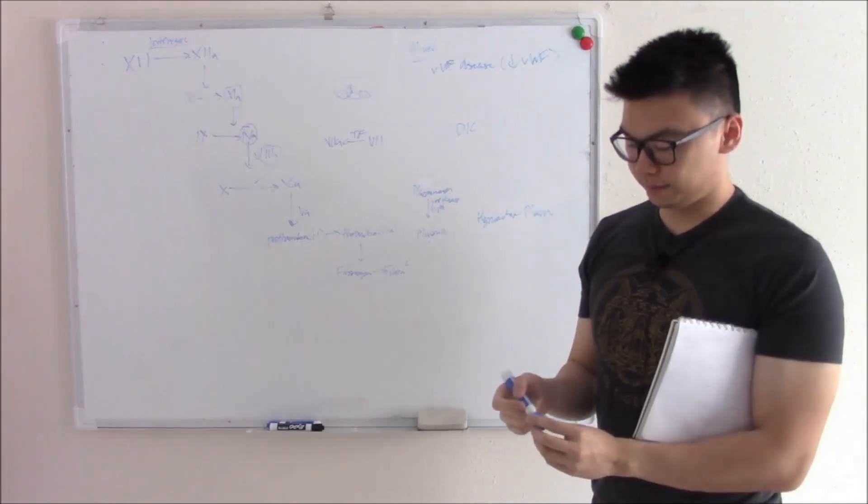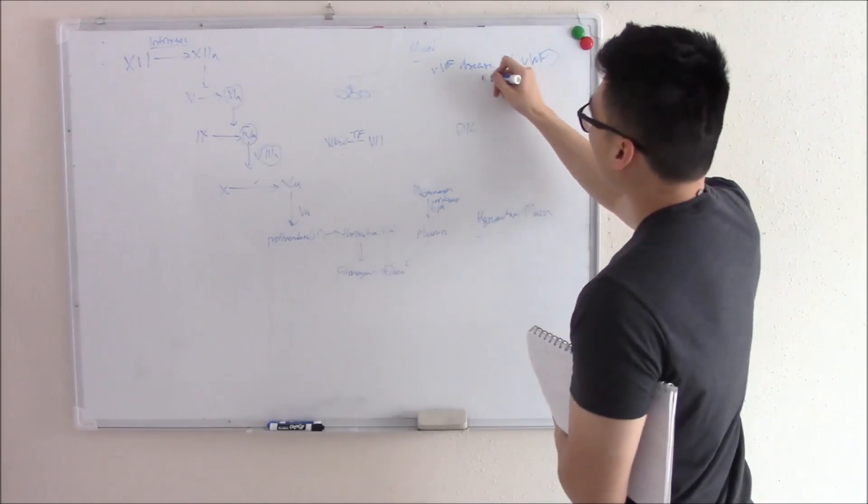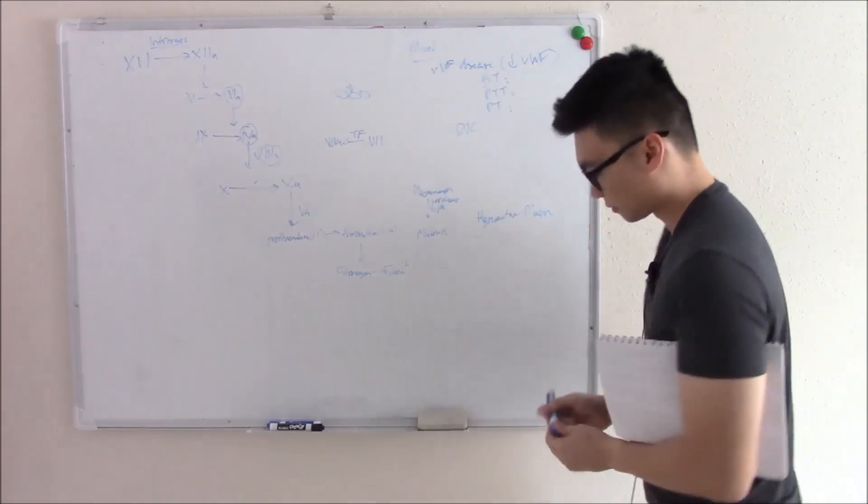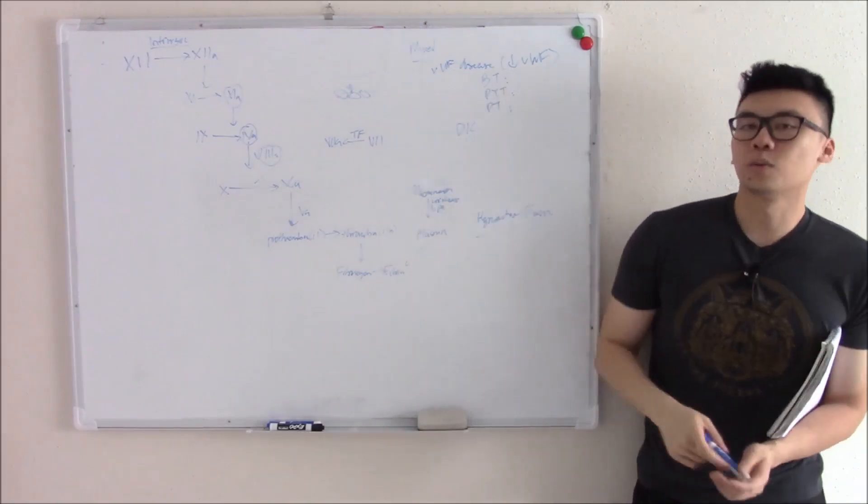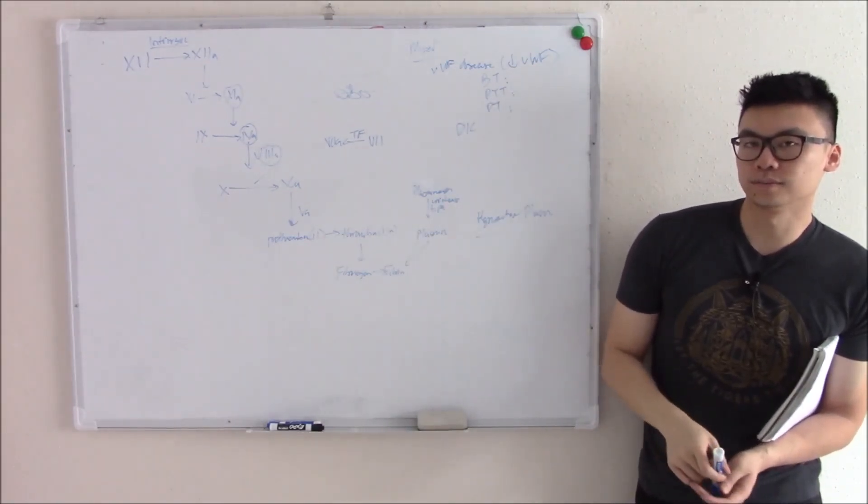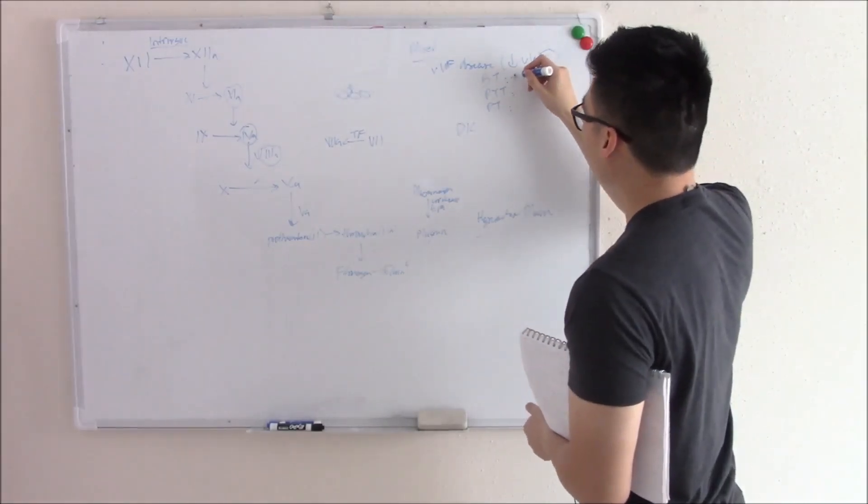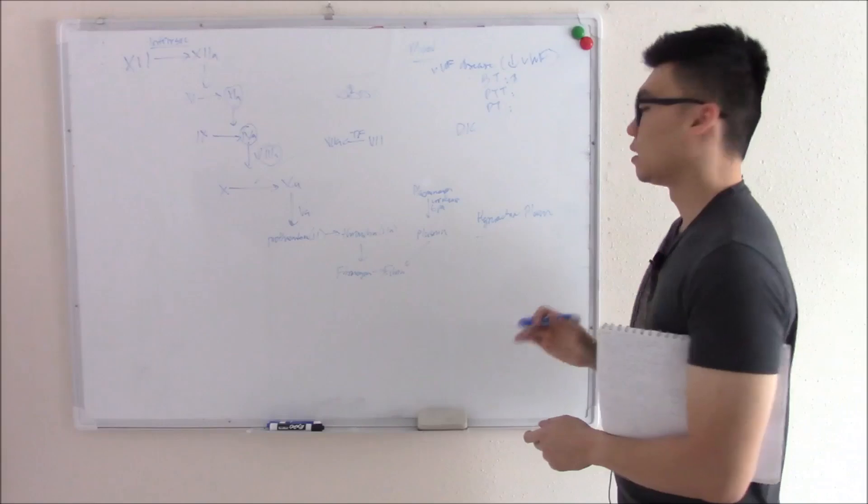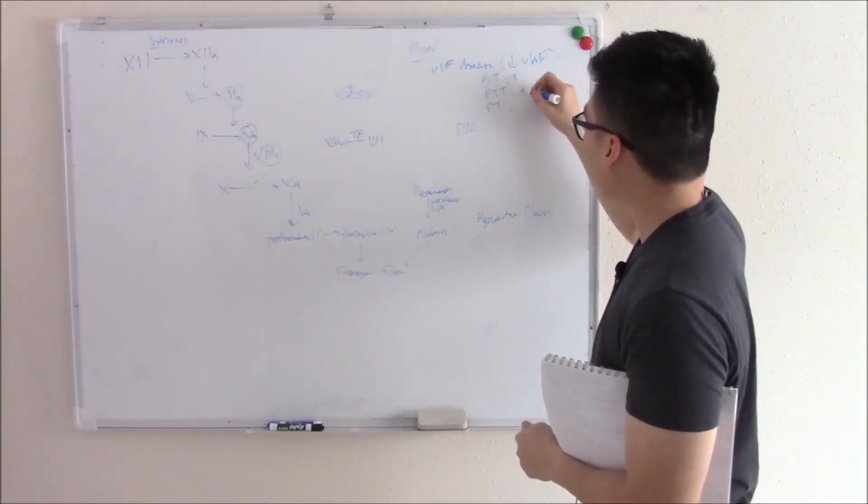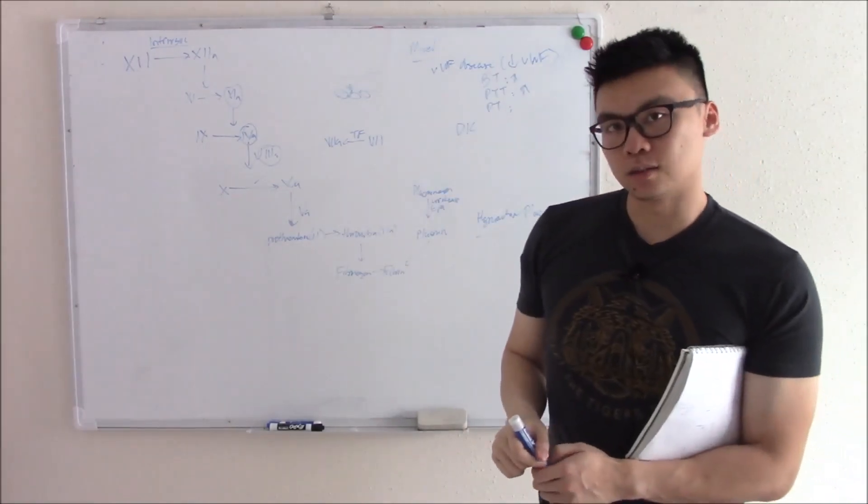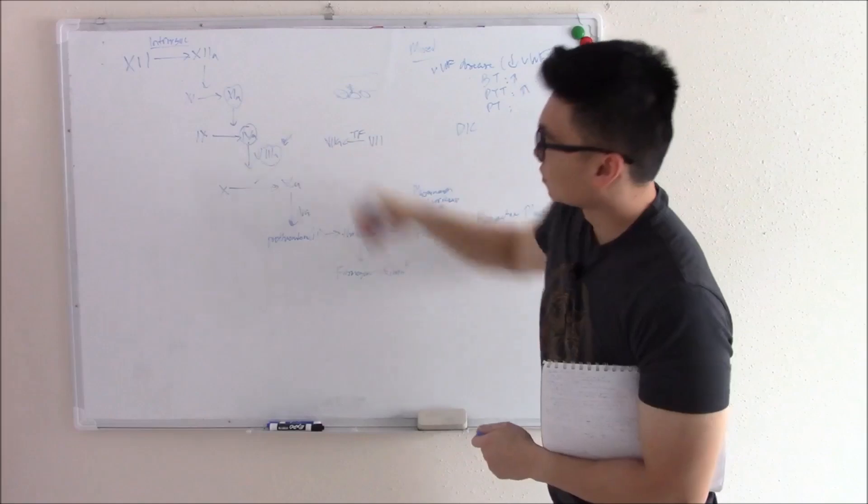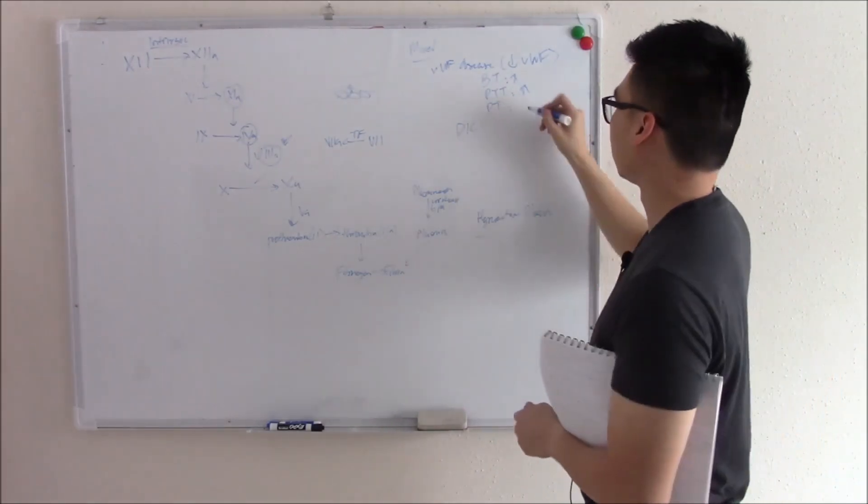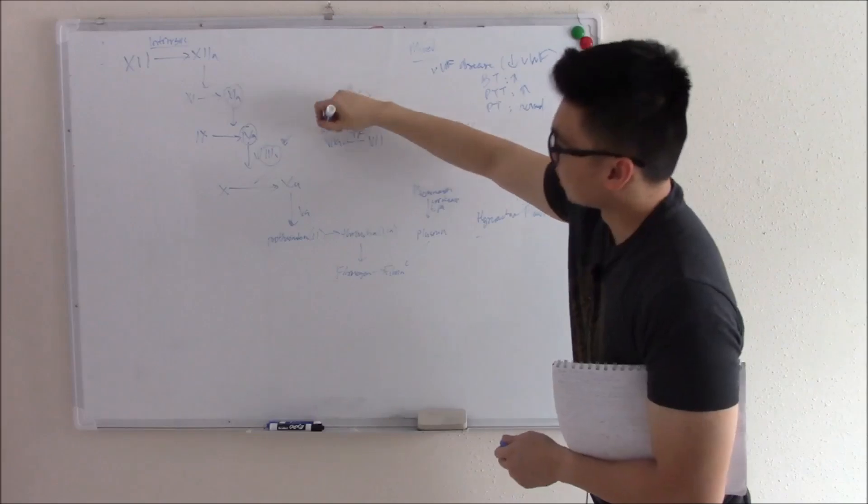Let's see if we can figure out the lab findings. What will be your bleeding time? Will it be elevated or normal? It will be elevated. Your platelets can't bind. There's a problem with your platelet binding. Therefore, you have increased bleeding time. How about your PTT, your intrinsic pathway? Normal or abnormal? It will be elevated. Why is that? Didn't I say von Willebrand factor stabilizes factor VIII? Where's factor VIII found? In your intrinsic pathway. How about PT? Will it be normal or abnormal? Normal. It has nothing to do with the extrinsic pathway.